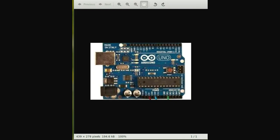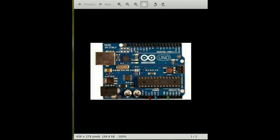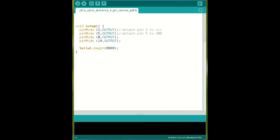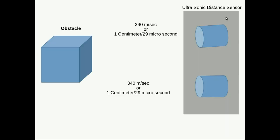Let's see how the distance sensor works. In an ultrasonic distance sensor we have one sound emitter and the second one is the receiver. When the sensor emits the sound, we know that sound travels at 340 meters per second.